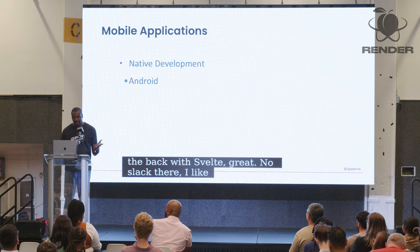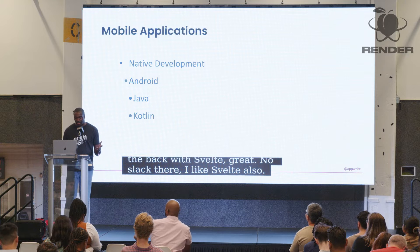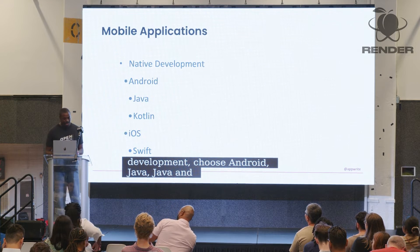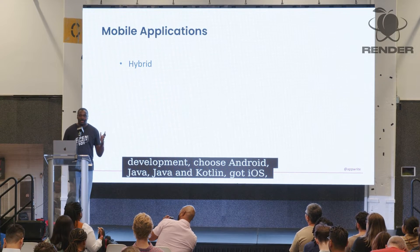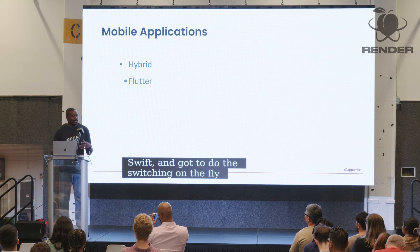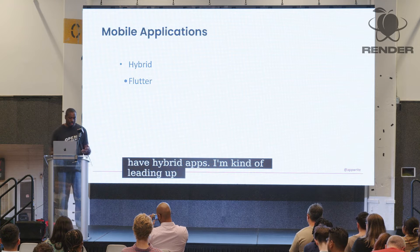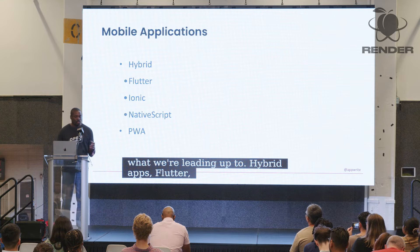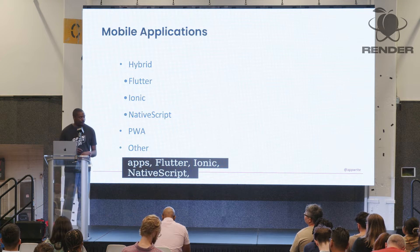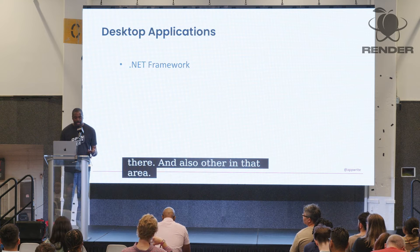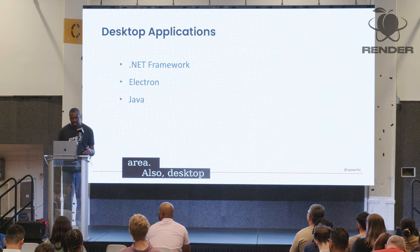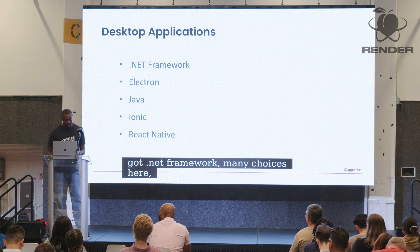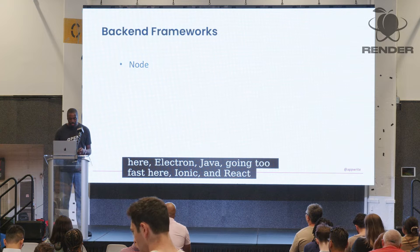For mobile apps, we've got native development: Android, which uses Java and Kotlin, and iOS with Swift and Objective-C. We also have hybrid apps — Flutter, Ionic, and NativeScript. There are also PWAs if you want a more hybrid approach. For desktop apps, we've got .NET Framework, Electron, Java, Ionic, and React Native.